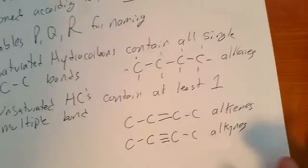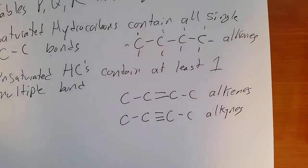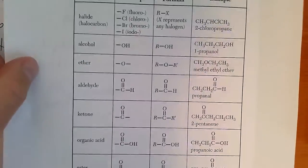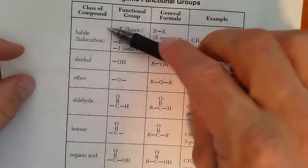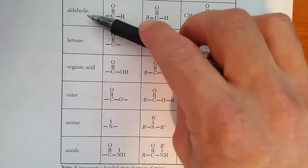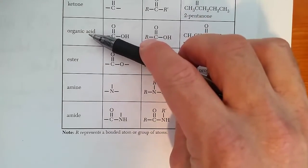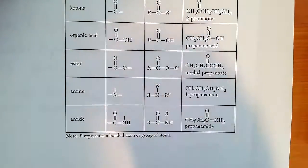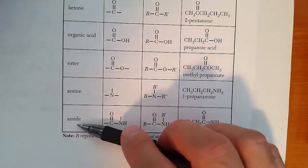All right, so there's all sorts of organic molecules. I'm not going to make you write them down because they're all here on table R. Halides, alcohols, ethers, aldehydes, ketones, organic acids, esters. And then much less used in chemistry, amines and amides.